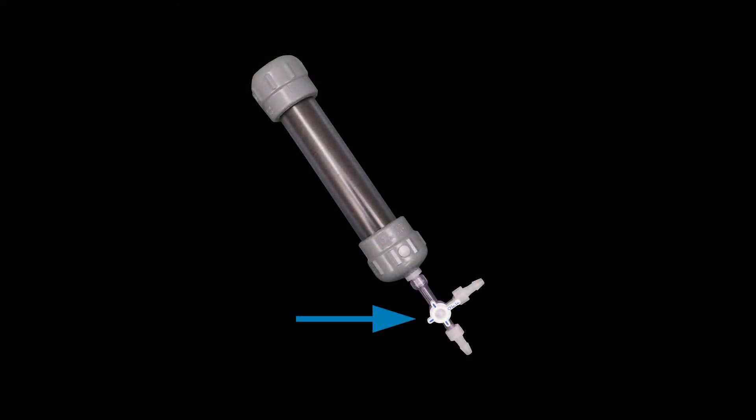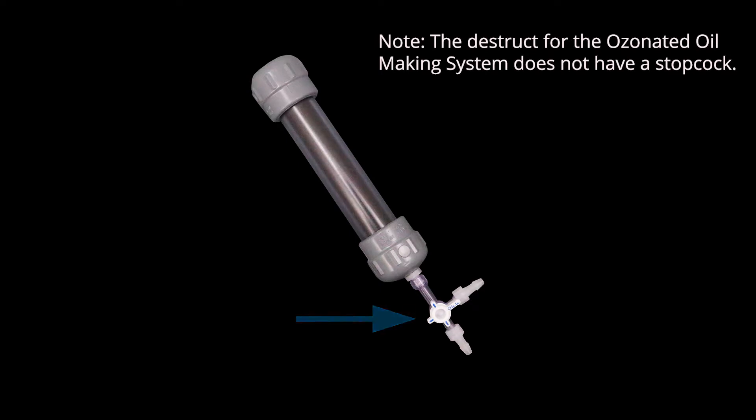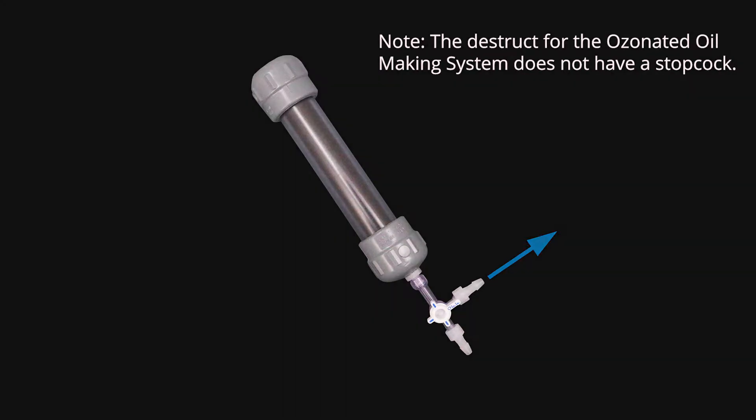The destruct system comes with a three-way stopcock which allows you to direct the ozone into the destruct or into any accessory attached to the destruct.